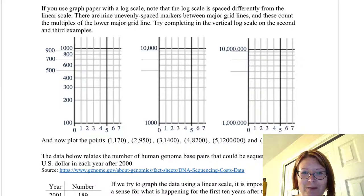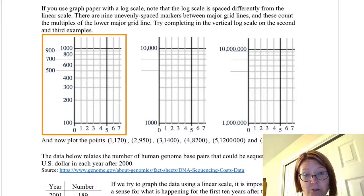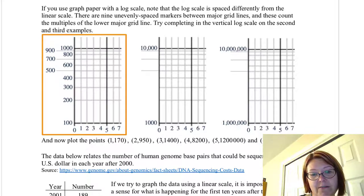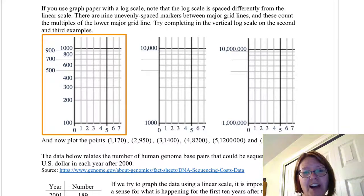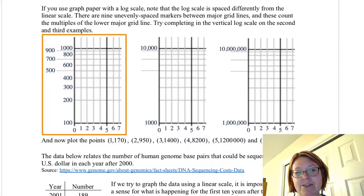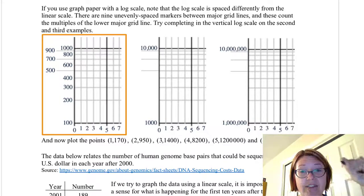When we look at log scaled graphing paper, there are nine unevenly spaced markers between major grid lines, and these count the multiples of the lower major grid line. For example, on the first set of grid lines that we have here, the x-axis is counting from zero to seven evenly spaced, counting out zero, one, two, three, four, five, six, seven. The y-axis counts 100, 200, 300, 400, 500, 600, 700, 800, 900, 1000. So it looks like we're adding 100 each time, but those are not evenly spaced values anymore. So the space between 100 and 200 is the biggest space, and then 200 to 300 is the next biggest space, 300 to 400 is the next biggest space, and of course that means that the space between 900 and 1000 is very, very small. So these are not evenly spaced markers.